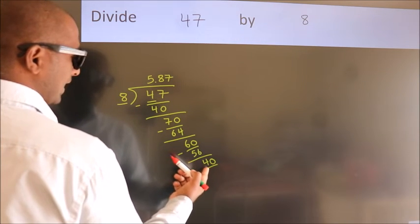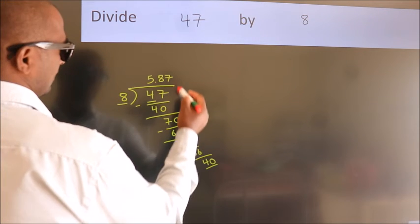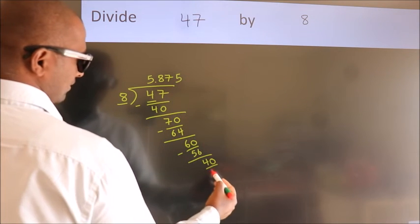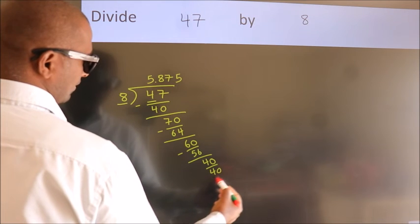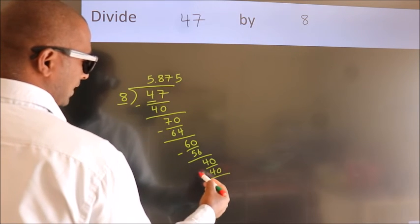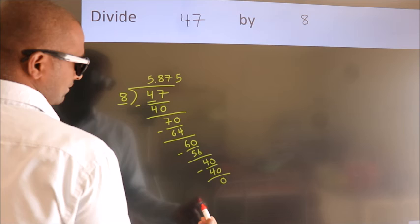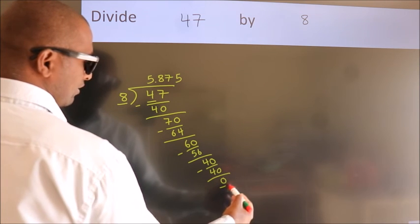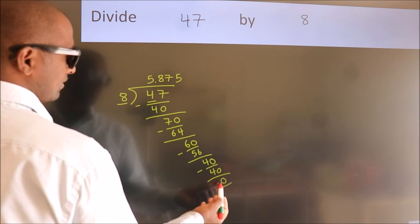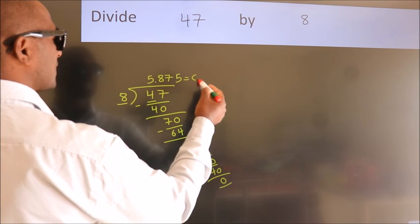When do we get 40? In 8 table. 8 fives 40. Now, we subtract. We get 0. Here, we got remainder 0. So, this is our quotient.